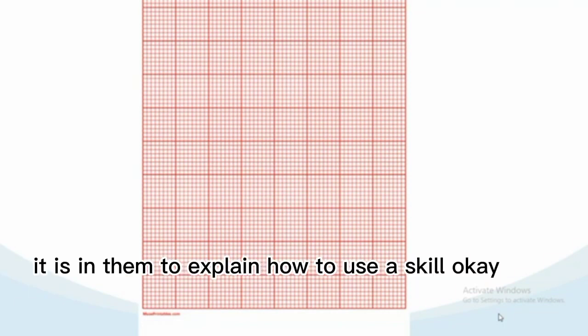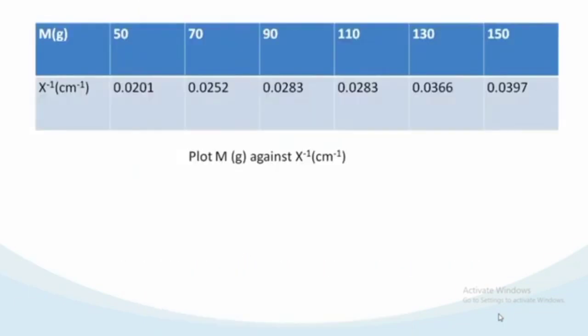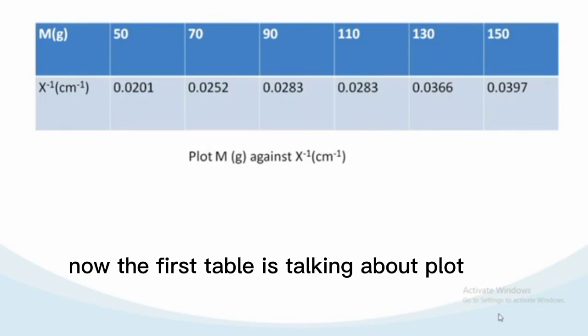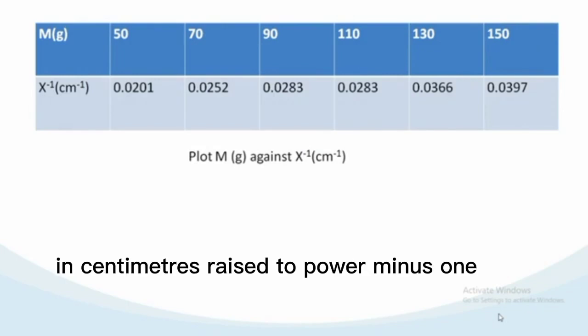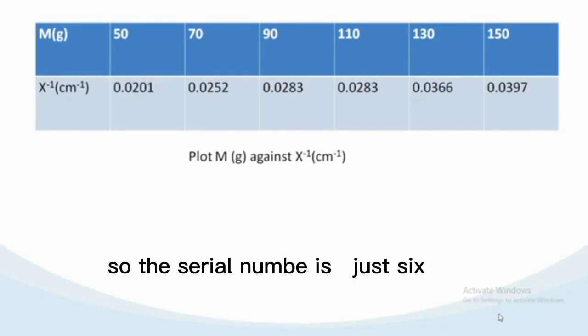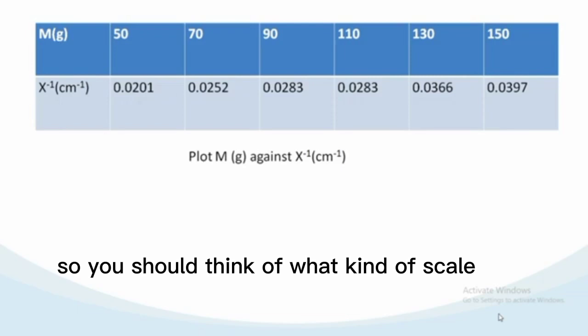The first table is talking about plot a graph of mass in grams M(g) against inverse of distance in centimeter X^-1(cm^-1). Here the values are 50, 70, 90, 110, 130, and 150. So you should know what kind of scale you can use to find all these values.